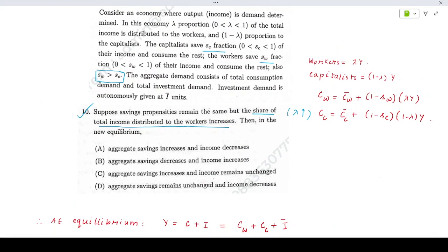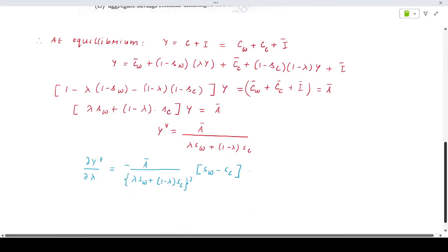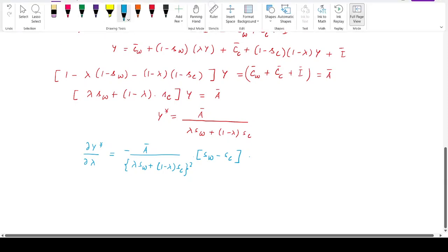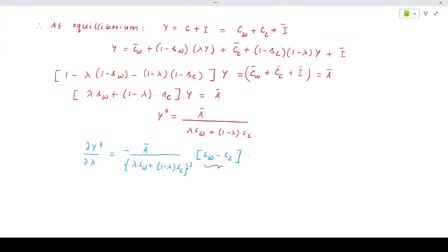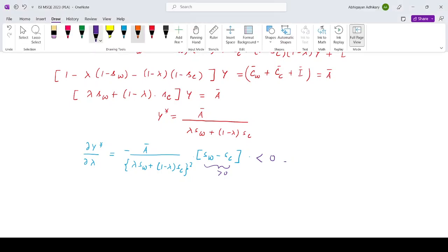It's given in the question that workers save more than the capitalists. SW greater than SC, which implies that this part is positive and everything else positive with a minus makes it negative. So the aggregate income will fall.